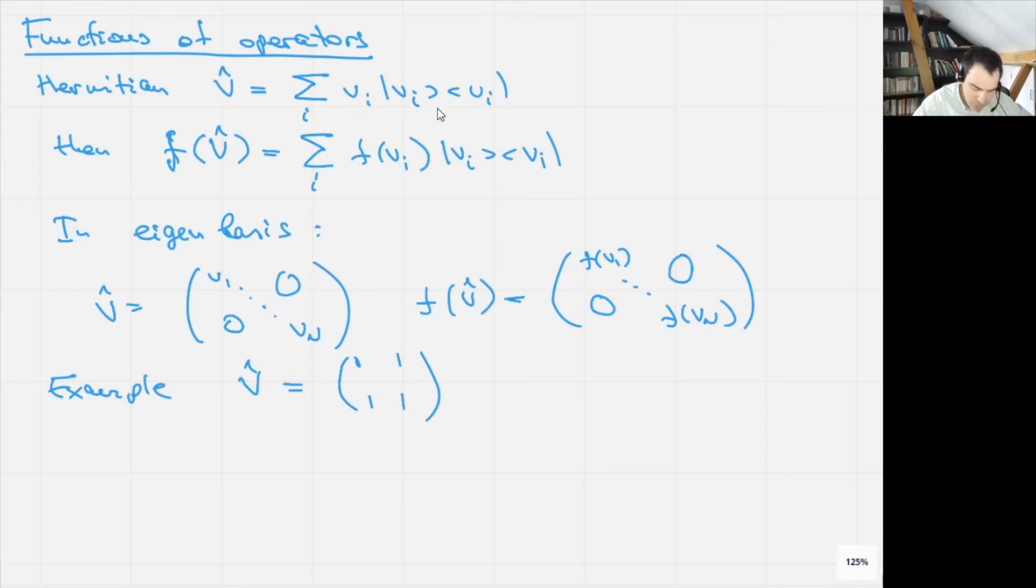And we want to find the exponent of this operator, find e to the power iV-hat. Let's begin with diagonalizing the operator, that is finding its eigenvalues and eigenvectors.